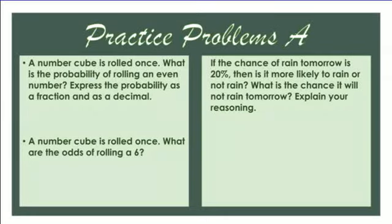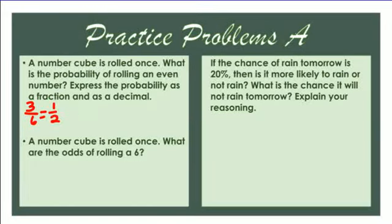A number cube is rolled once. What is the probability of rolling an even number? Express the probability as a fraction and as a decimal. A number cube has six sides numbered one through six. The denominator is six. Even numbers are two, four, six — that's three. So three out of six, reduced to one half, and as a decimal that's 0.5.